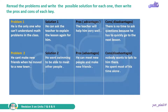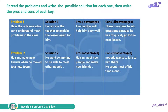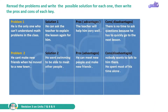Problem number two: the problem is that he can't make new friends after moving to a new town. The solution is that he went swimming to be able to meet other people. The pros of this solution are that he can meet new people and make new friends. The cons of this solution are that nobody wants to talk to him there and he spends most of his time alone.